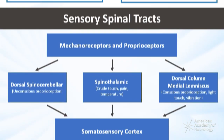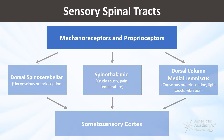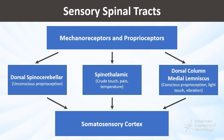Sensory pathways consist of highways that ascend from the cutaneous mechanoreceptors of the body, such as free nerve endings, Merkel disc, and Meissner's corpuscles, to the fourth-order neurons located within the primary somatosensory cortex. Major tracts, including the dorsal spinocerebellar, spinothalamic, and dorsal column medial lemniscus, carry different stimuli such as unconscious and conscious proprioception, crude and light touch, vibration, pain, and temperature.